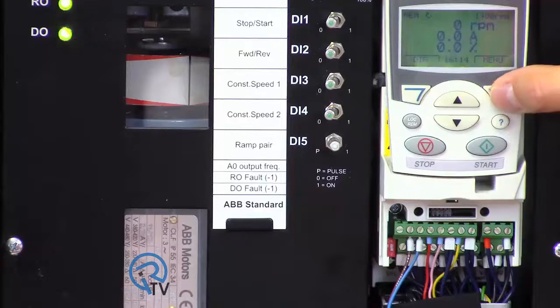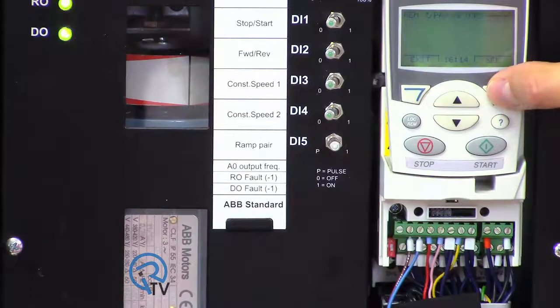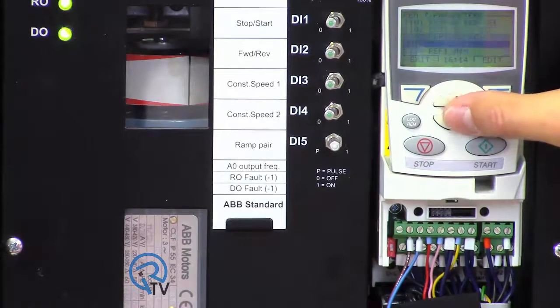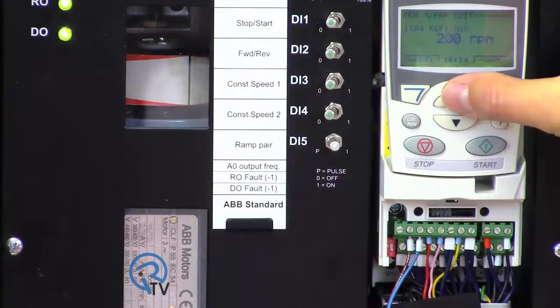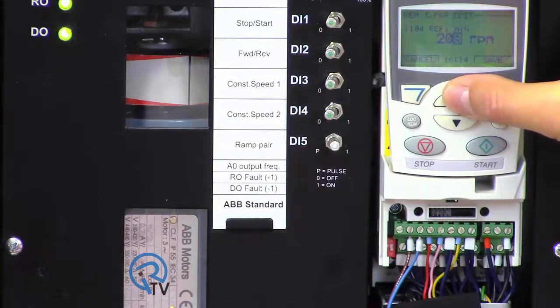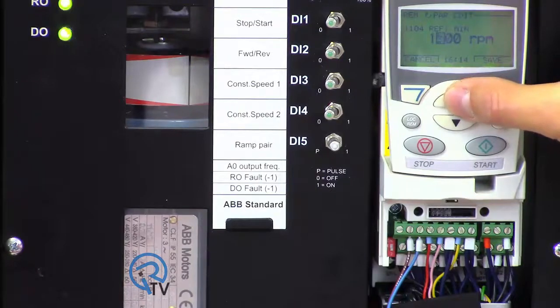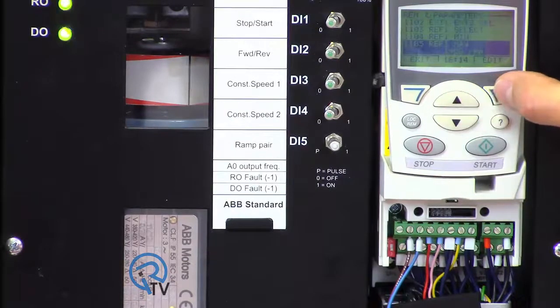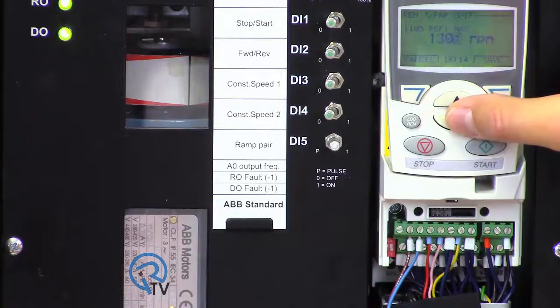Back to parameter 1104, change this to 1400 RPMs, and change 1105 to 200 RPMs.